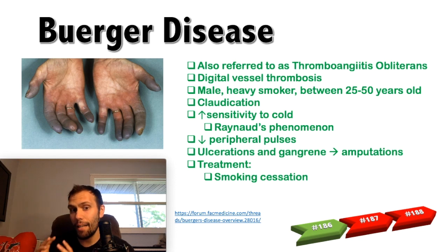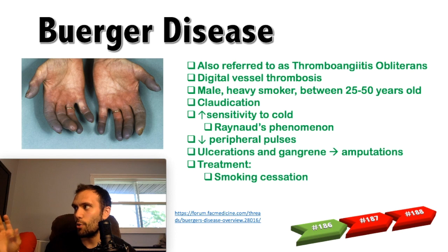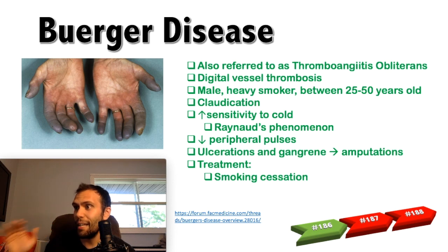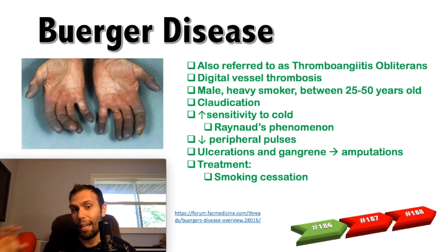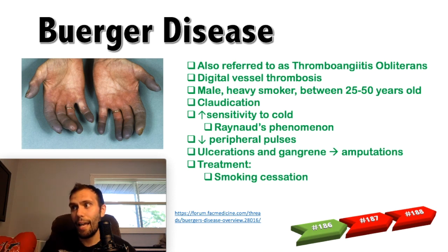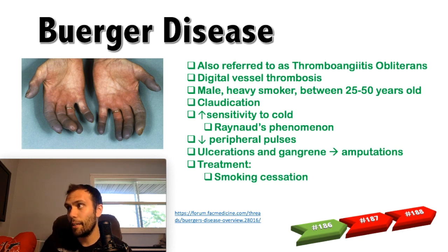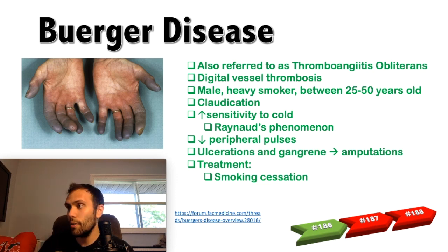The classic patient for Buerger's disease is a male heavy smoker, usually between 25 and 50 years old, with recurrent and chronic inflammation of arteries in the hands and feet. The main symptom to remember is pain in the affected areas while resting and walking — some form of intermittent claudication. They may have sensitivity to cold, Raynaud's phenomenon, and decreased or absent peripheral pulses due to inflammation in the vessel walls.